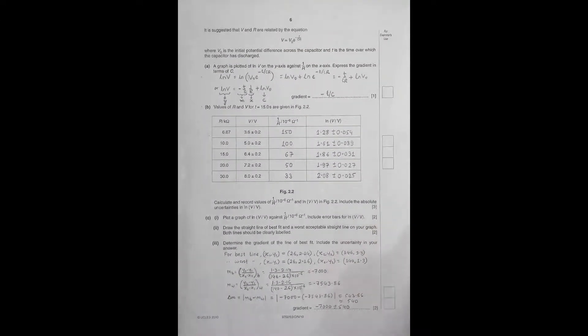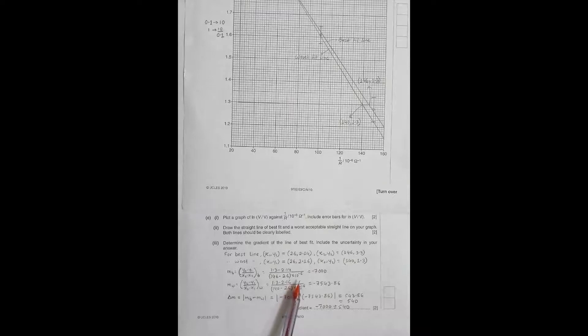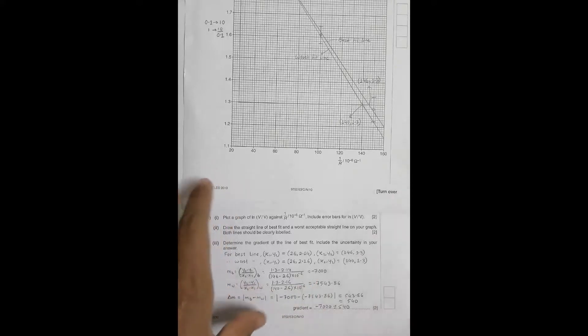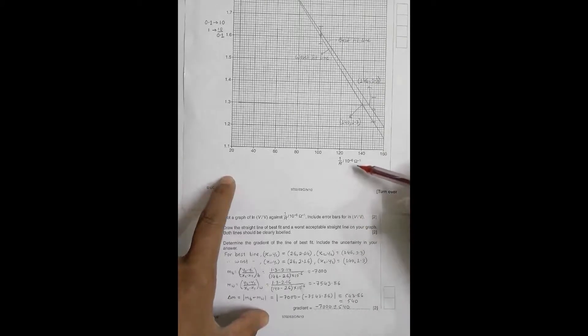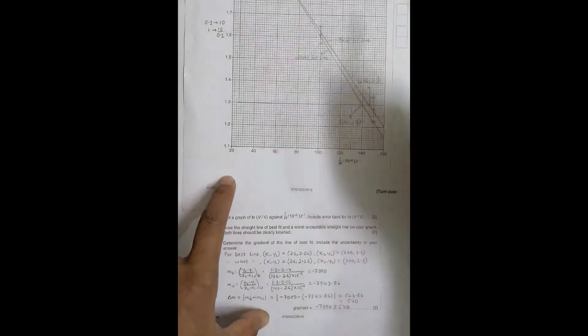One important thing to remember: on the x-axis, the values were in units of 10⁻⁶ per ohm, so I must include the 10⁻⁶ factor in the denominator when computing the gradient in proper SI units. If you forget this, the final answer will be completely wrong. Always check what prefix or power-of-ten suffix was used on the axis.